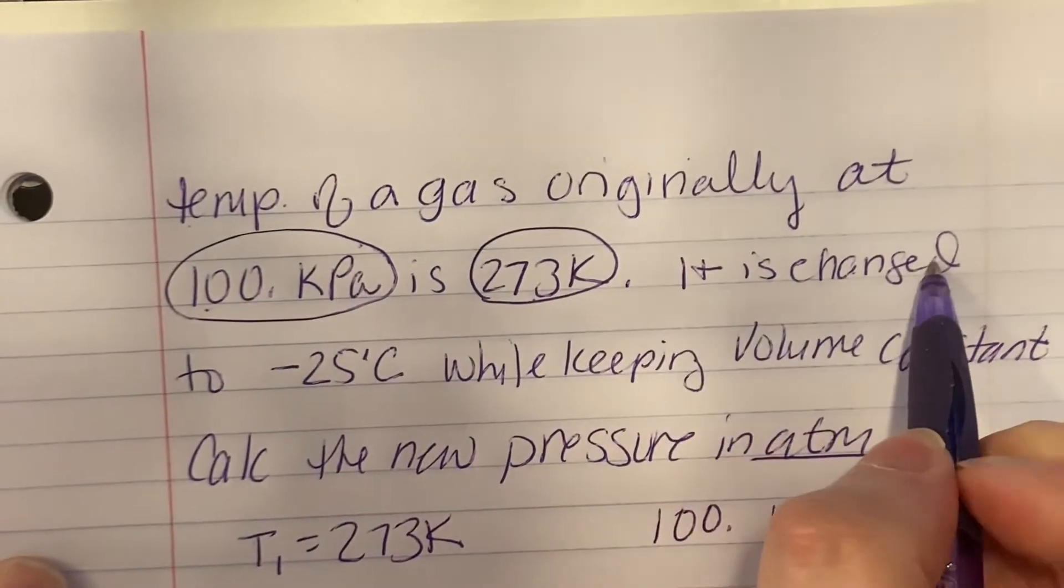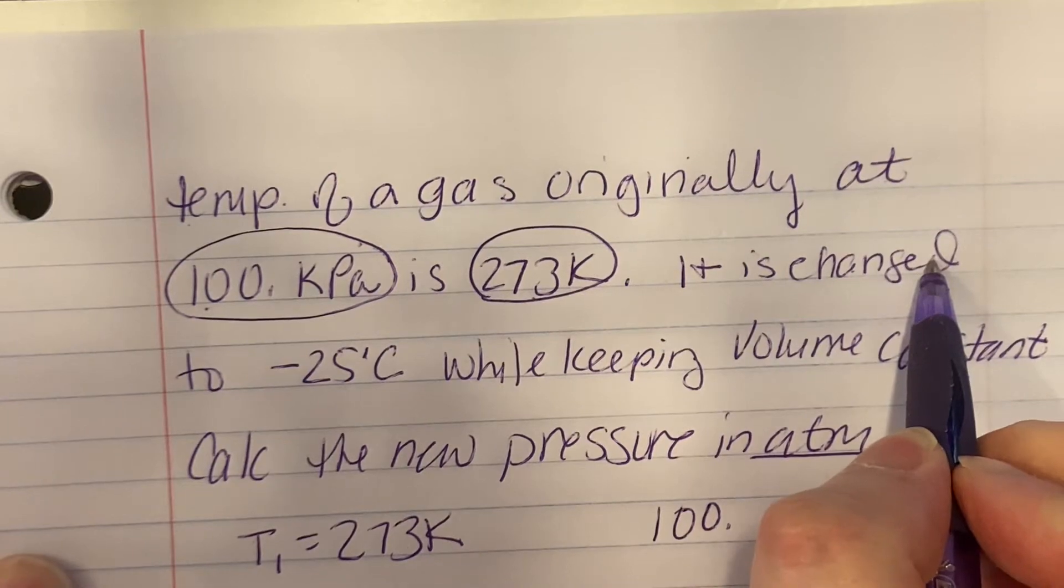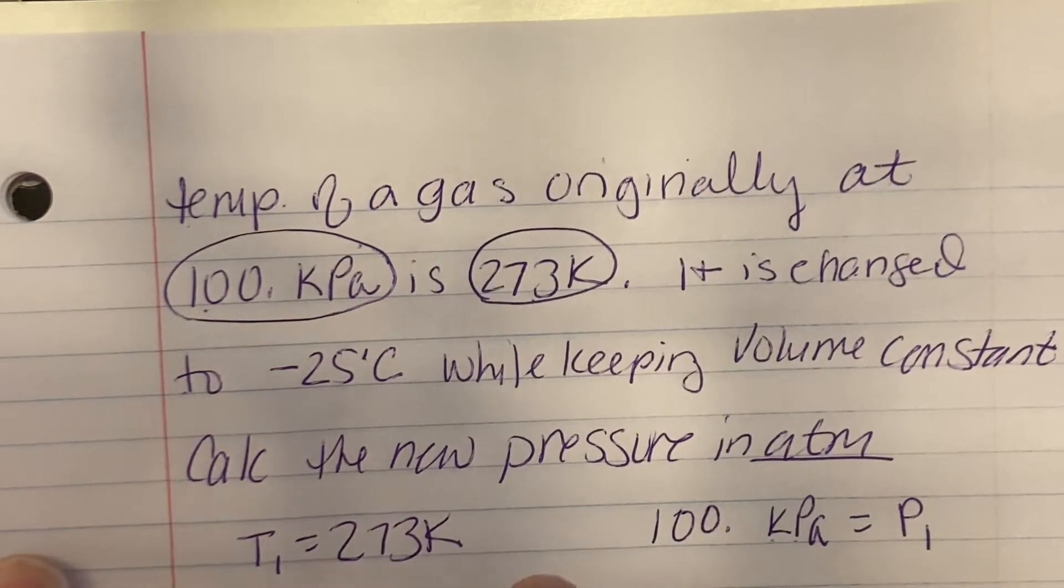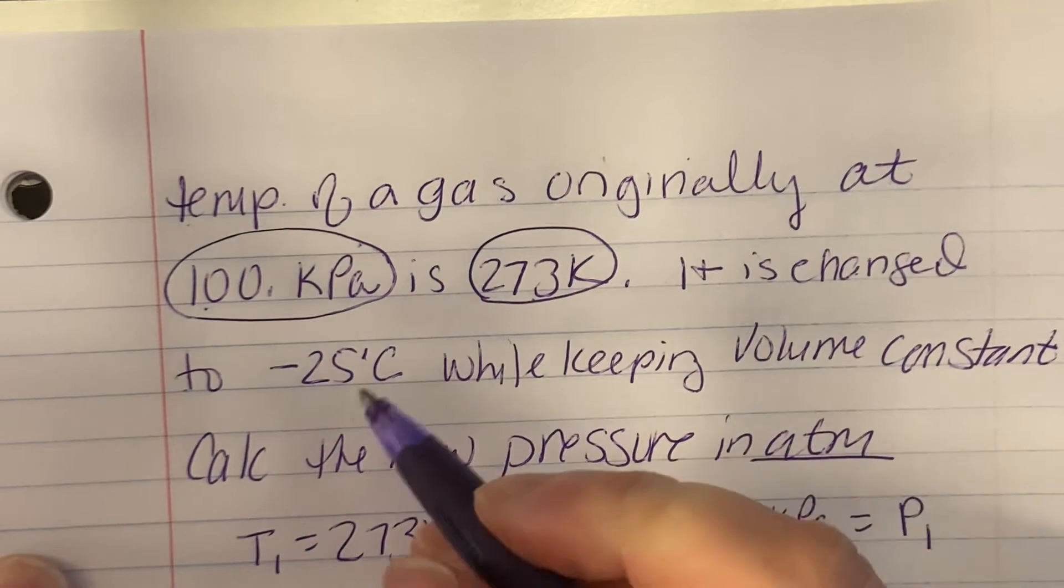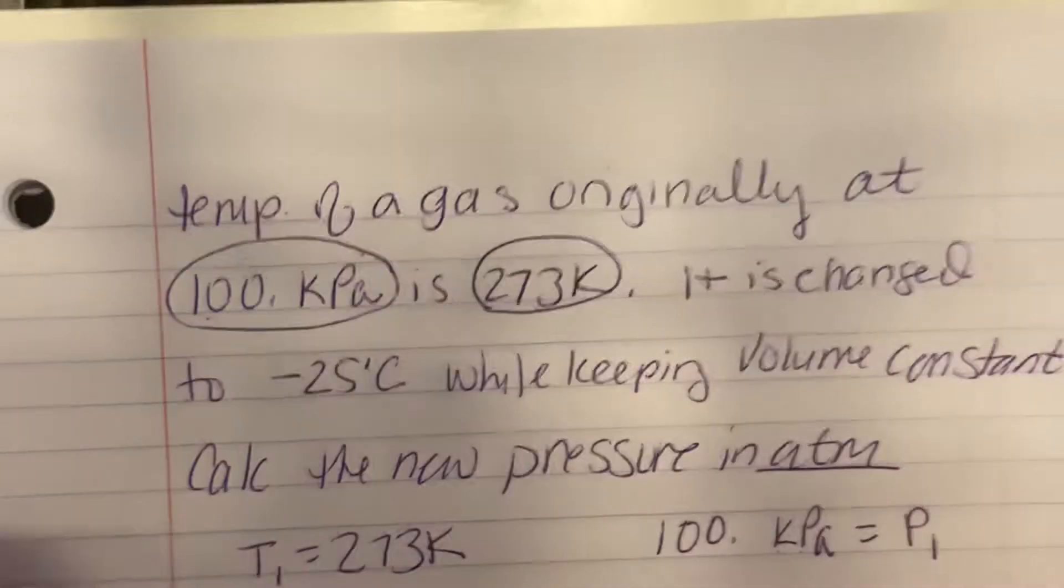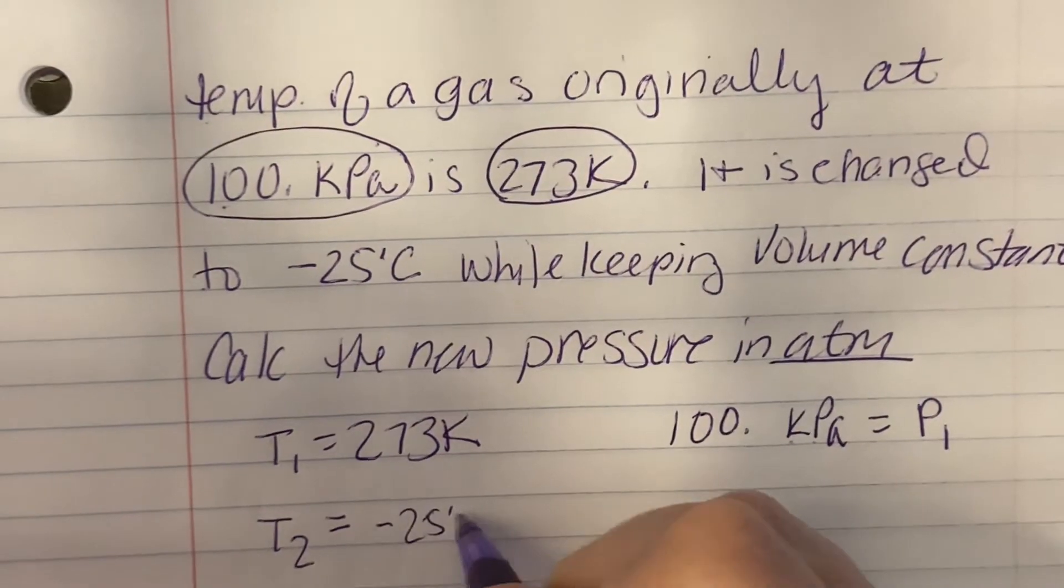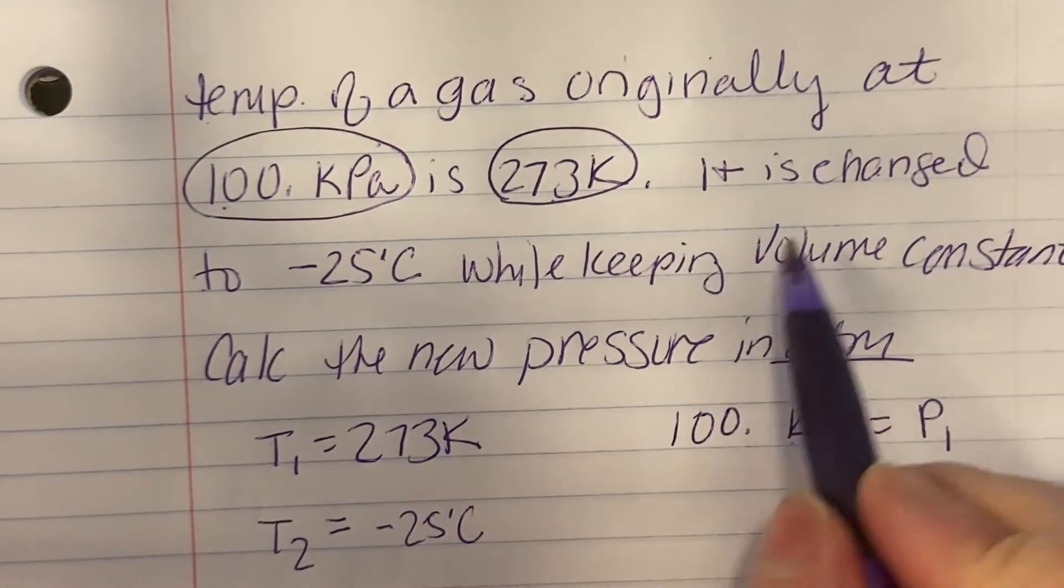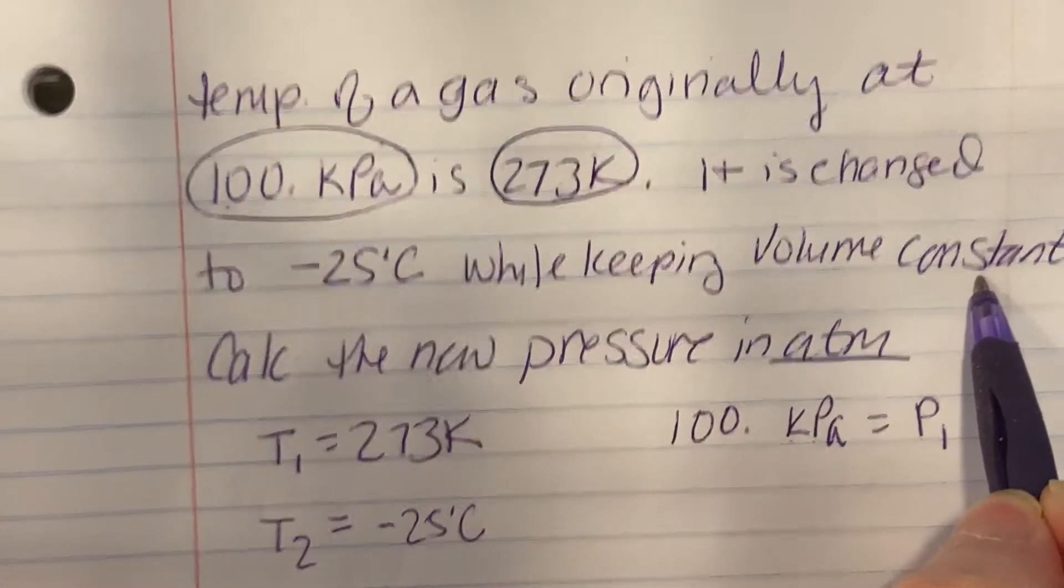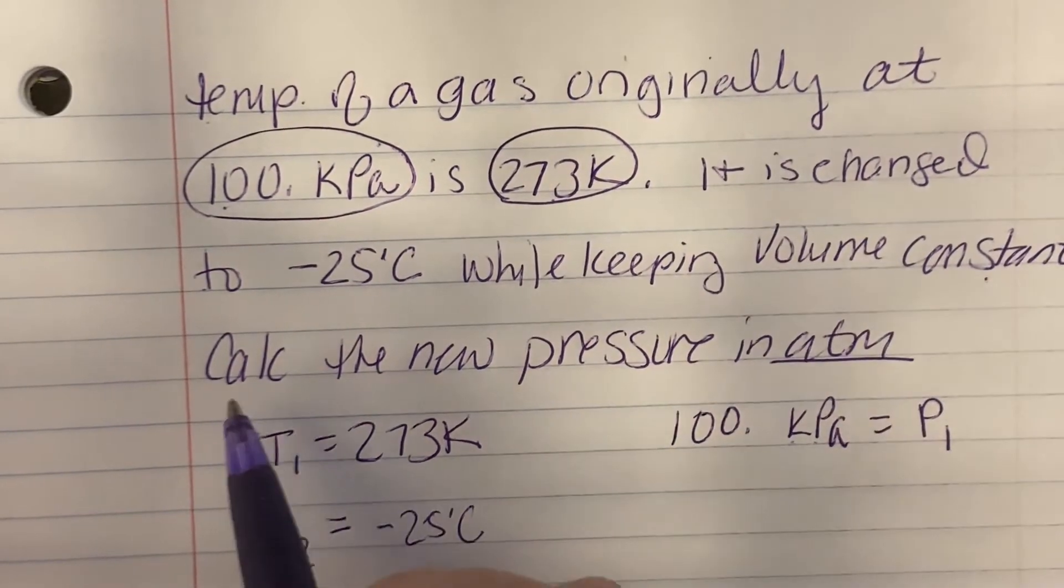It is changed, that means I'm now going to go to the ending to negative 25. So my new temperature, my changed temperature, my ending temperature is T2 equals negative 25 degrees C. And the volume is constant, so there's no numbers there.